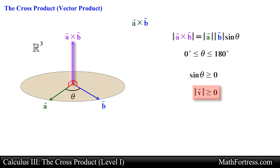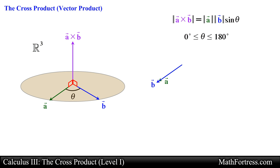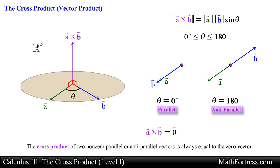This ensures the new vector will never have a negative magnitude. Recall that the magnitude of a vector is always a positive number or 0. By using an angle between 0 and 180 degrees along with sine of theta, we are able to generate magnitudes that are positive or 0. Vector a and vector b are parallel when theta equals 0 degrees and anti-parallel when theta equals 180 degrees — in both cases the magnitude of the new vector equals 0. So the cross product of two non-zero parallel or anti-parallel vectors is always equal to the zero vector.